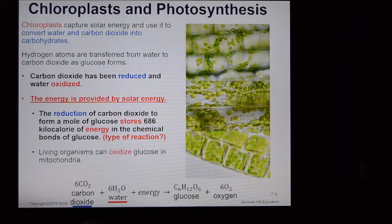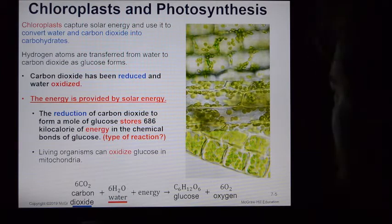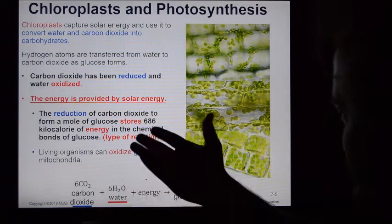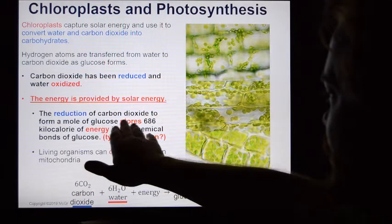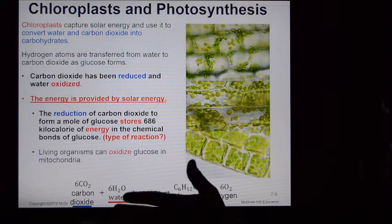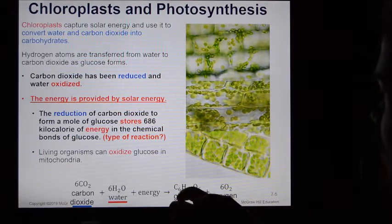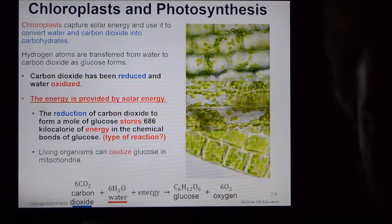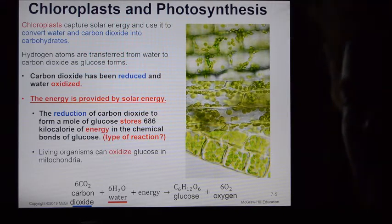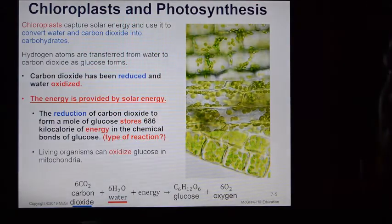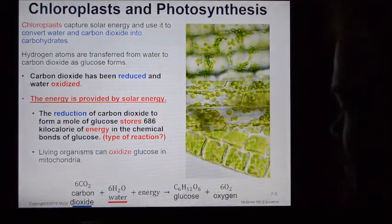Chloroplasts capture solar energy and use it to convert water and carbon dioxide into carbohydrates. Carbon dioxide is reduced and water is oxidized. The reduction of carbon dioxide to form glucose stores 686 kilocalories of energy. When you build carbohydrate molecules from photosynthesis, this is energy-storing — it stores a lot of energy. This is a synthesis reaction; you're building something which stores energy. It is endergonic.